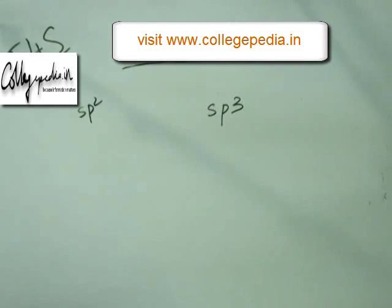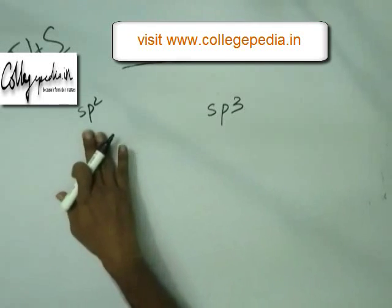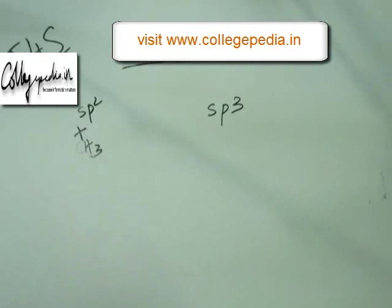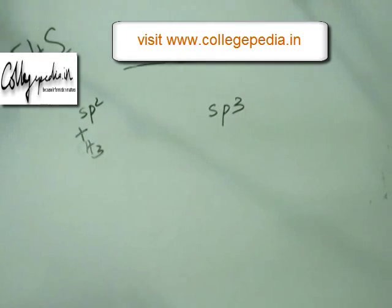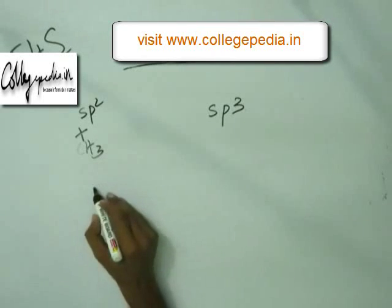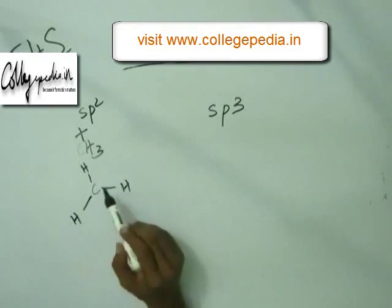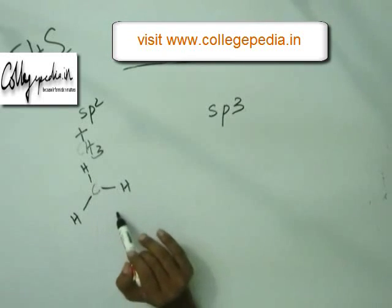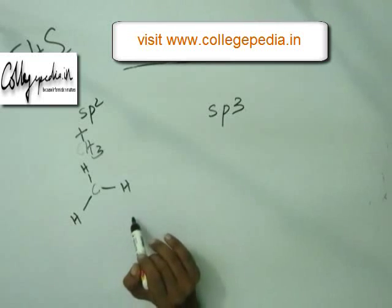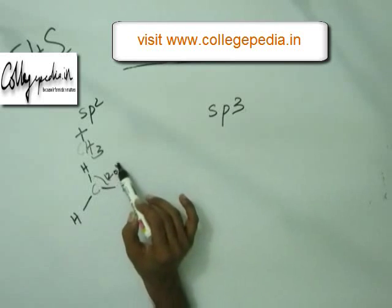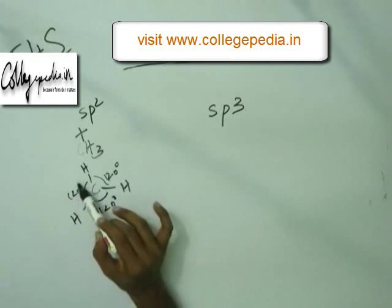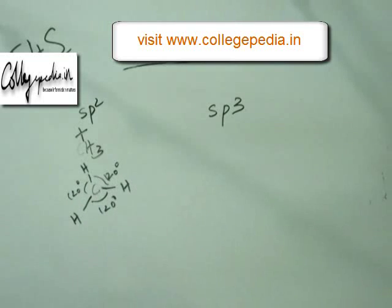After learning hybridization and how to find hybridization states, let's talk about the shape or geometry of an atom at different hybridization states. For sp2 hybridization, take the example of methyl carbocation — we already learned its hybridization is sp2. In space, methyl carbocation exists with the three C-H bonds spread in the same plane as far apart as possible. This geometry is called trigonal planar, where bonds are at an angle of 120 degrees.